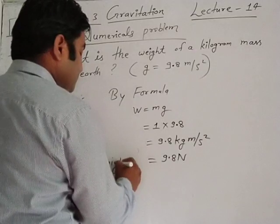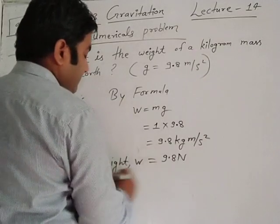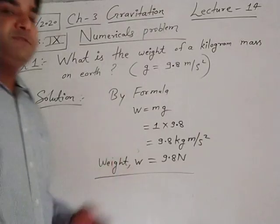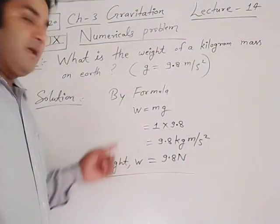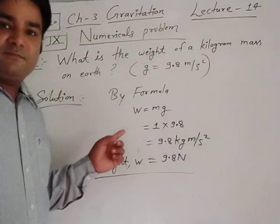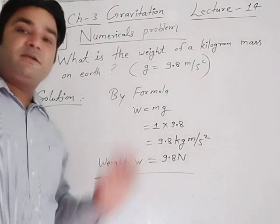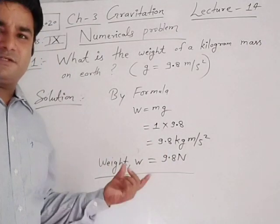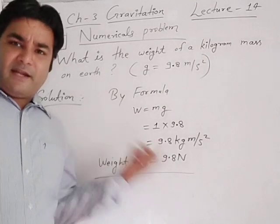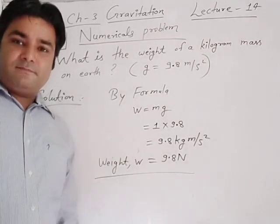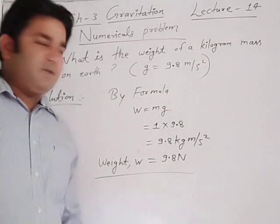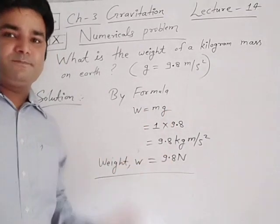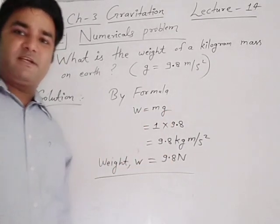The weight of a body or object on Earth is equal to 9.8 Newton. Very simple concept — when you just write one times everything will be clear. Only one simple formula: W is equal to mg. Just put in the values and solve. Note it down, after this we will solve the second numerical.